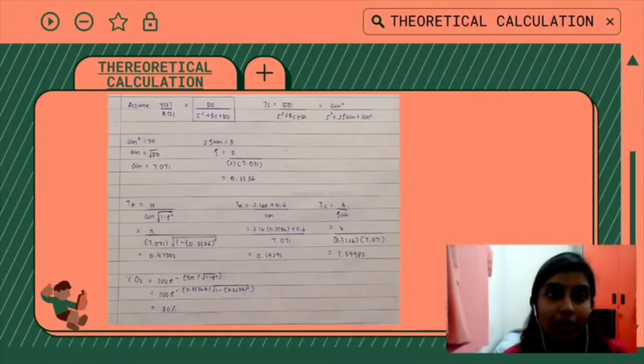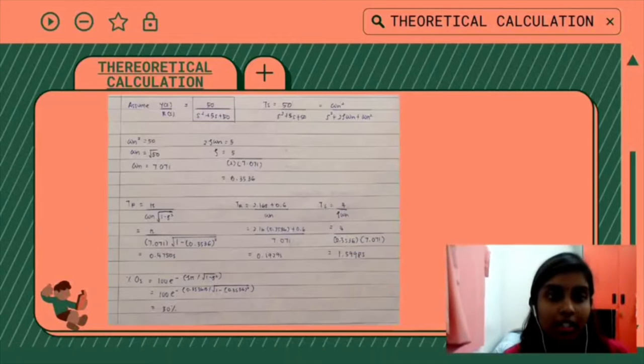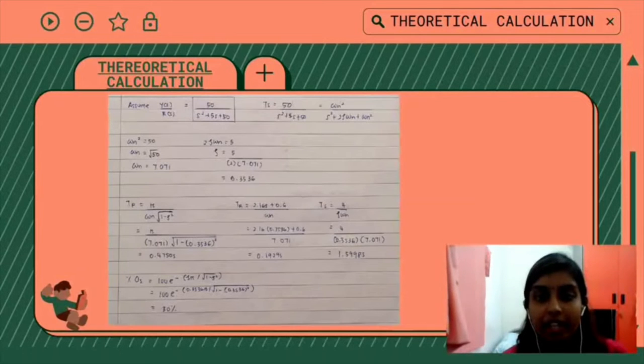Now I am going to present about theoretical calculation. For our air conditioning system, we assume a transfer function which is 50 over s squared plus 5s plus 50. From this transfer function we need to calculate omega n and zeta in order to calculate peak time, rise time, settling time, and also percentage overshoot. The value that we got from the calculation for omega n is 7.071 and for zeta, which is also known as damping ratio, the value is 0.3536. For peak time we got 0.4750 seconds. For rise time we got 0.1929 seconds. For settling time we got 1.5998 seconds. And for percentage overshoot we got 30%.